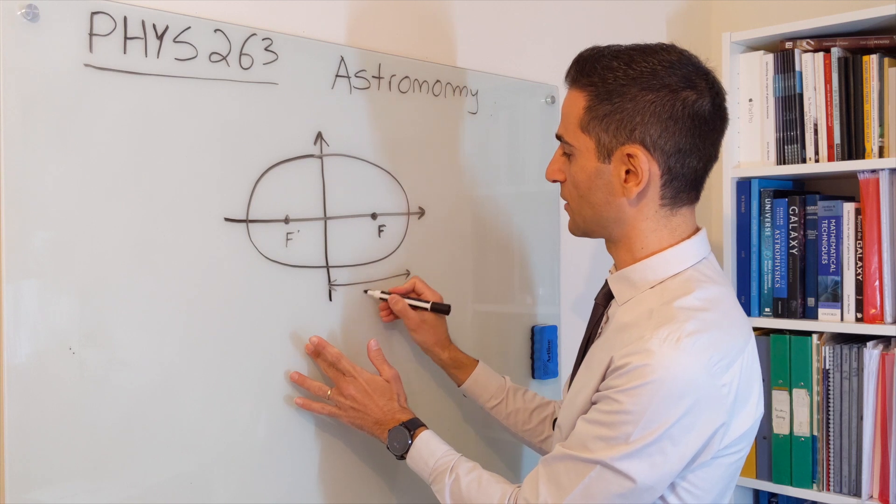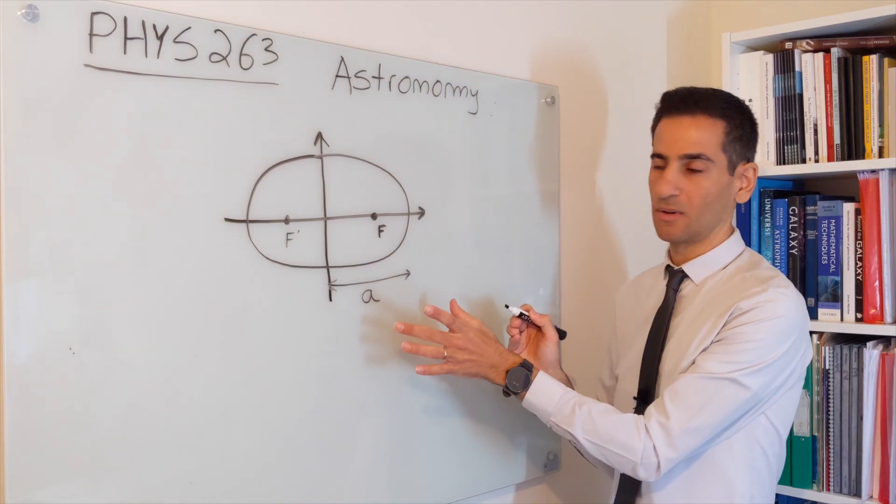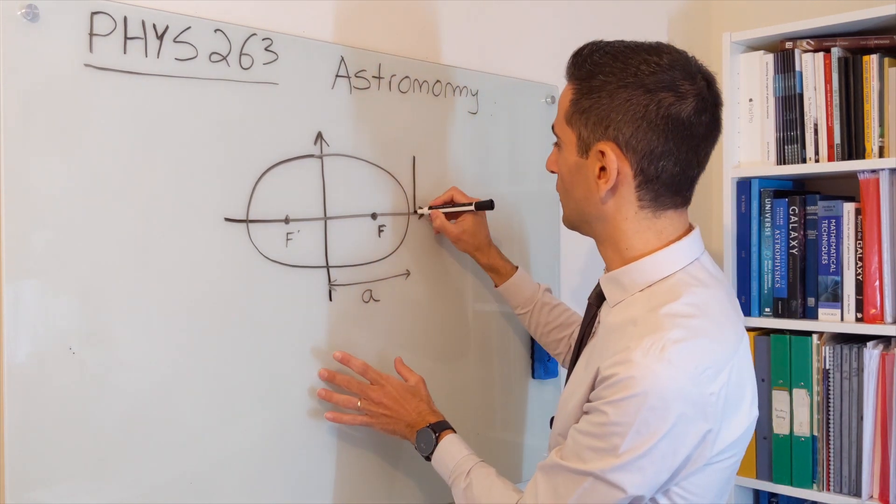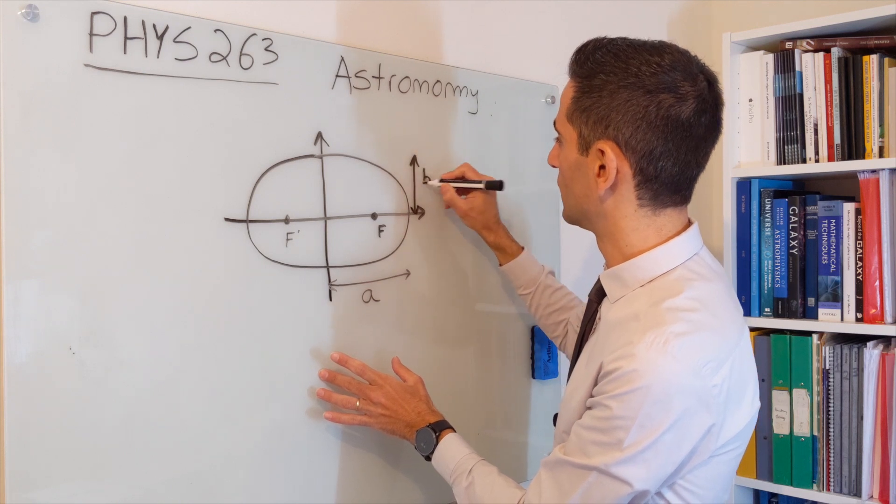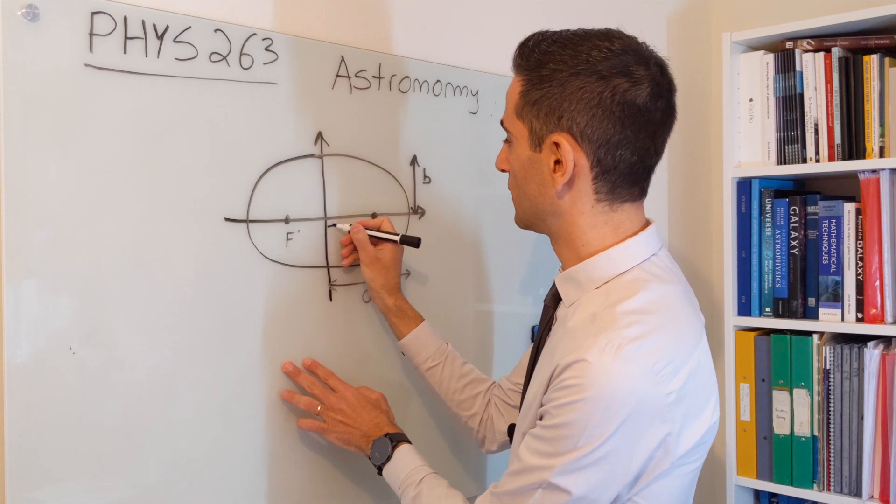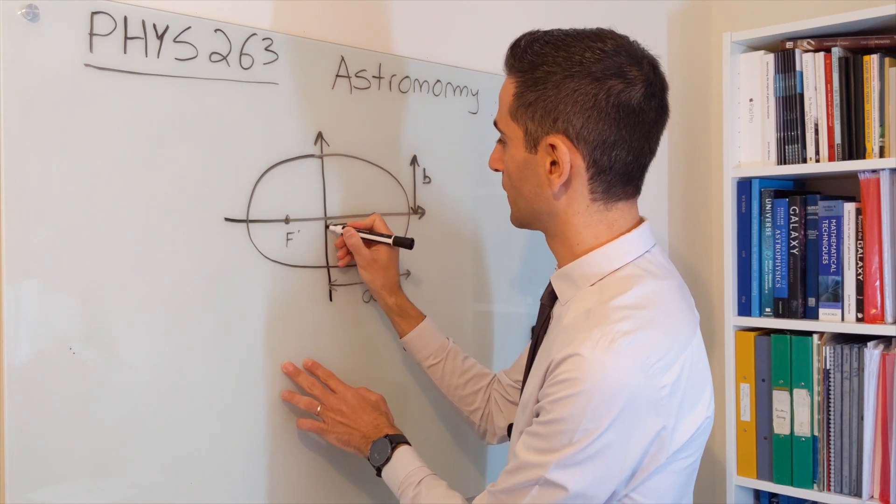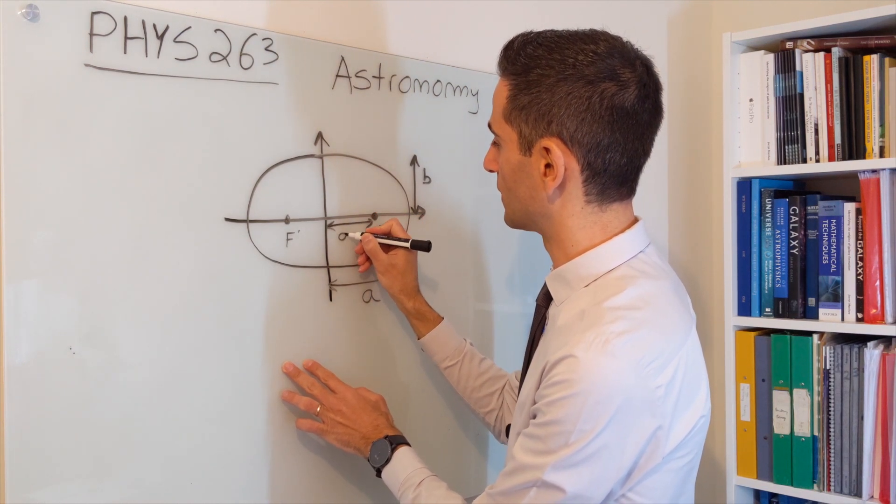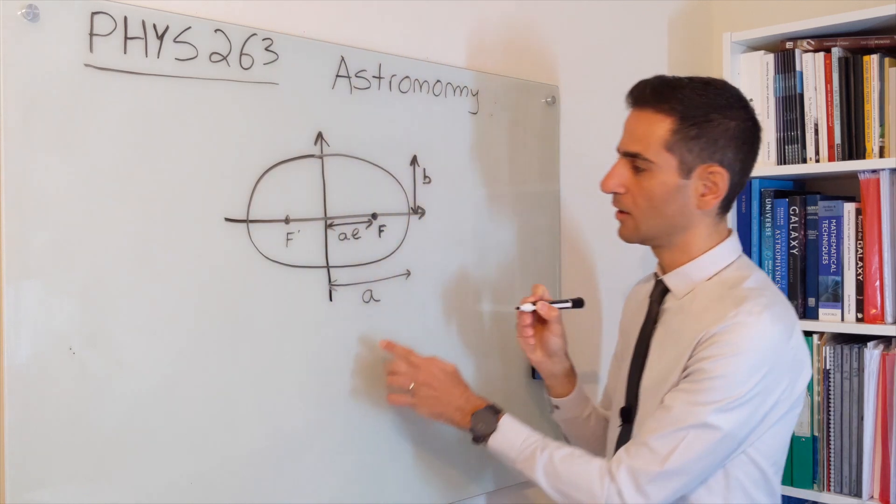It is important to understand that this distance is the semi-major axis—this is what we call a. And here, this is b, the semi-minor axis.